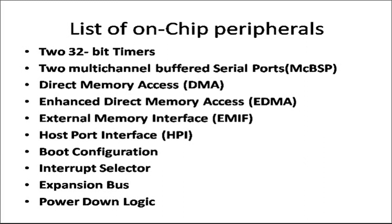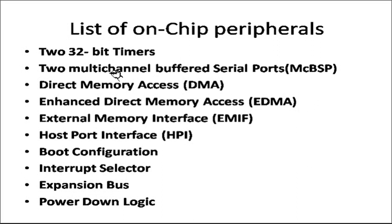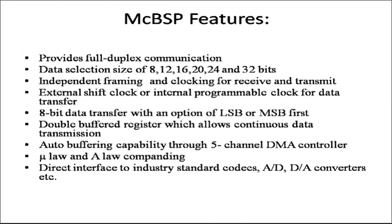We'll talk about two peripherals which are most important in this DSP processor: MCBSP. It stands for multi-channel buffered serial ports. Now there are two MCBSP ports namely MCBSP 0 and MCBSP 1. It provides full duplex communication. Data selection size of 8, 12, 16, 20, 24, or 32 bits.